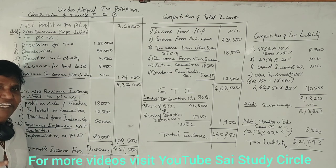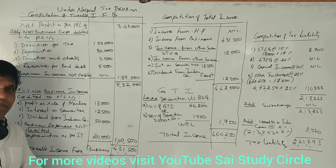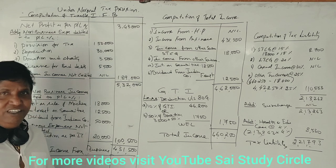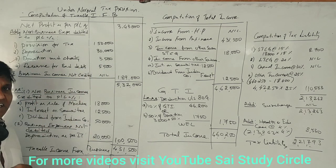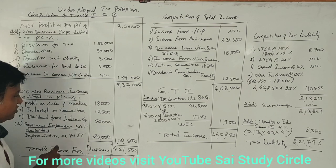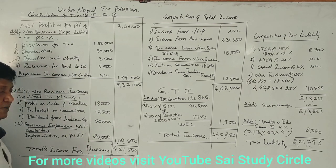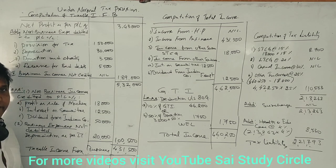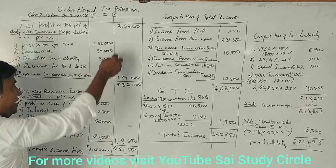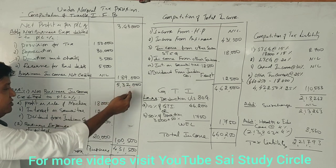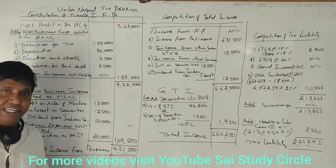Next, business expenses not debited: the allowable depreciation as per IT rules is 20,000 rupees. We already took the depreciation of 30,000 from the P&L debit side as an addition. However, as per IT rules, only 20,000 is allowed — so we deduct 20,000 here as depreciation as per IT rules, which is an allowable business expense. Now, check the totals: additions added to net profit give 5,32,000; less items total 1,00,500; subtracting gives taxable income from business of 4,31,500.